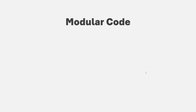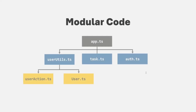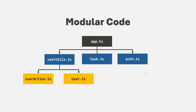Modular code simply means that you will split and write your code in multiple files so that each file on its own stays manageable and maintainable. So instead of writing code in a single app.ts file, you can split that app.ts file into multiple files. And then you simply import and export functions, classes, interfaces, etc. from one file to another file to use those functions and classes in the other file. You also need to make sure that all these files are connected by TypeScript, the browser, or some third party build tool.